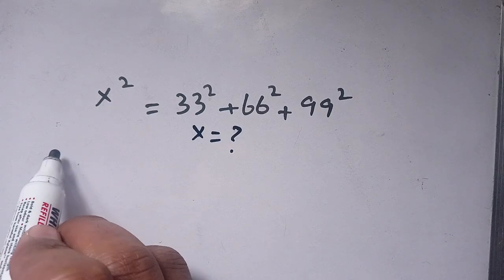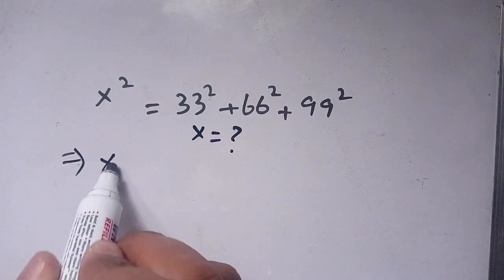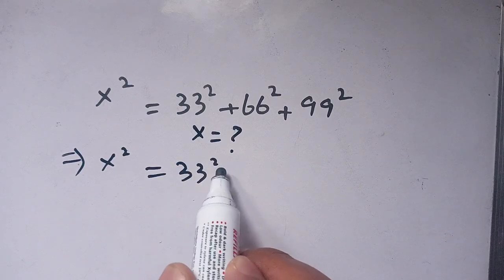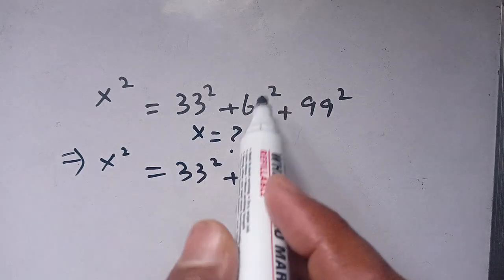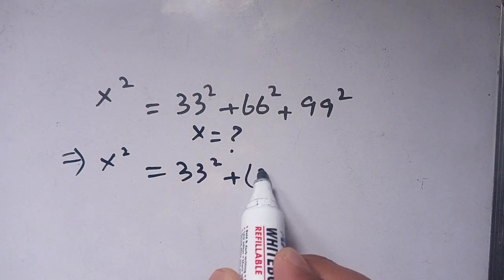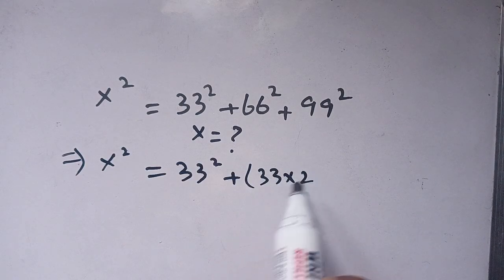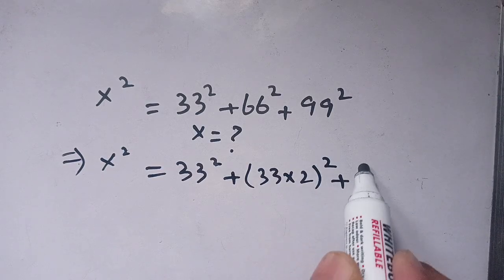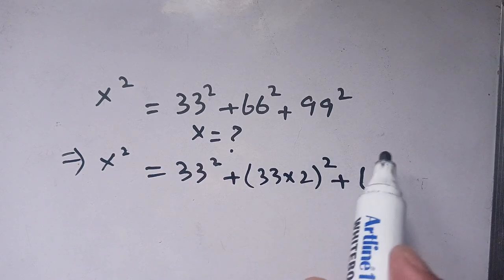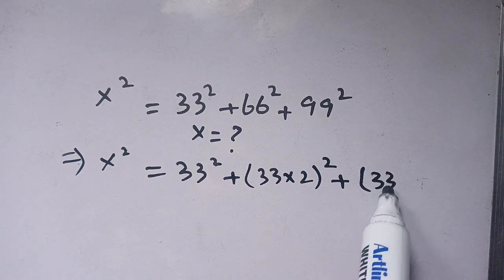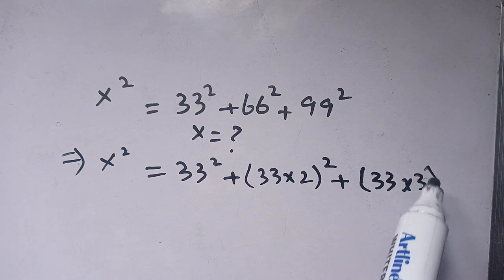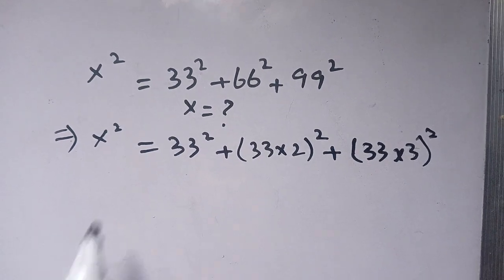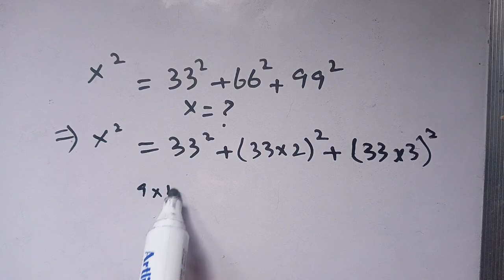Now let us solve this. We can write it as x squared is equal to 33 squared plus 66 — we can write 66 as 33 times 2, so it becomes 66 whole squared — plus 99, which can also be written as 33 times 3, and squared.